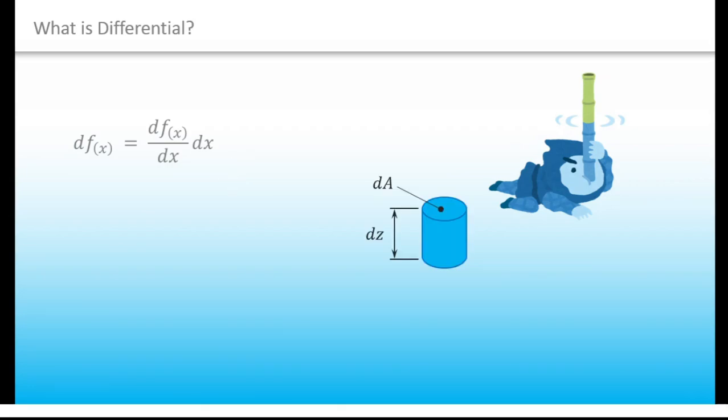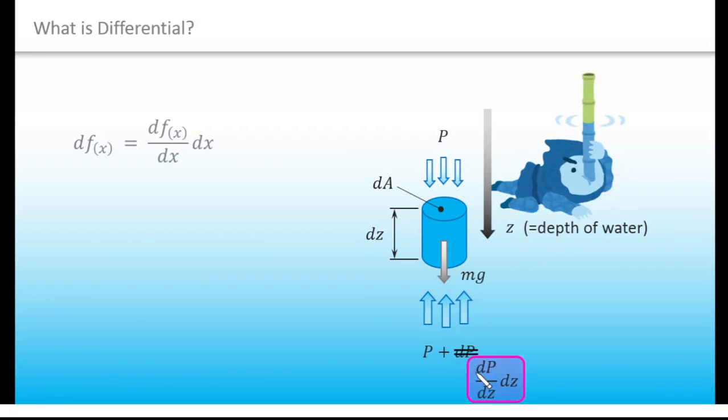We are going to consider this very small volume of water and write down forces applied to the volume. We don't know how different these pressures are from each other, so we will use dp as the difference. We still don't know the function of water pressure, but we feel like the function depends on the water depth. So, we can describe this dp like this. We just used this logic.